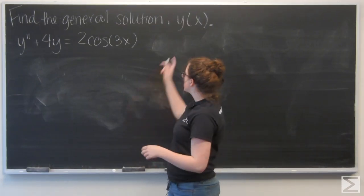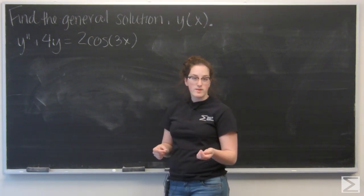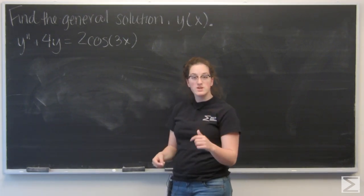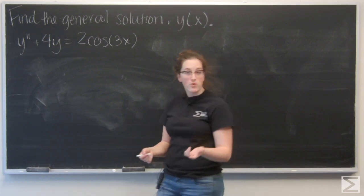So this question asked us to find the general solution y of x for the second order equation. And to do that, I want to start by finding the general solution for the homogeneous equation that matches this. And that's going to be y double prime plus 4y equals 0.